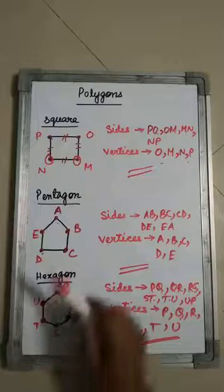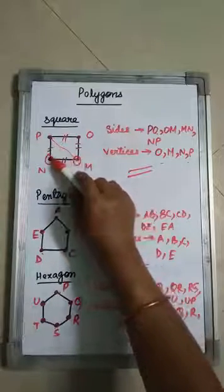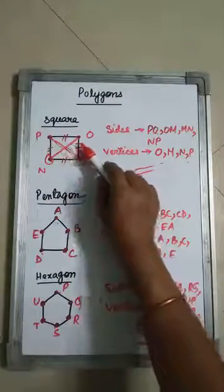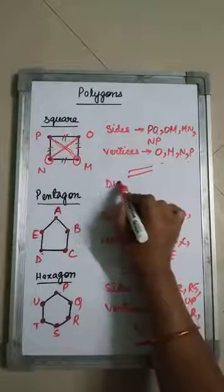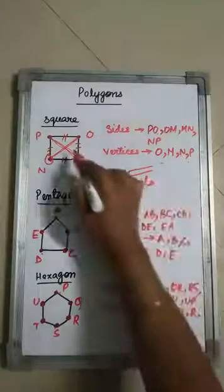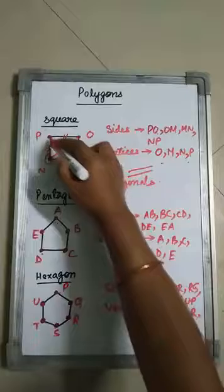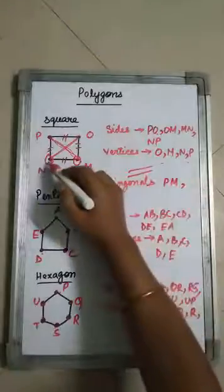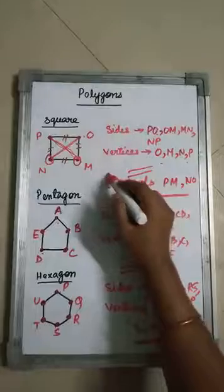What is a diagonal? A diagonal is formed by connecting opposite vertices. For the square PONM, the opposite vertices are P and M, and N and O. So the diagonals of this square are PM and NO.